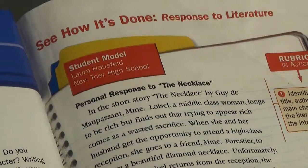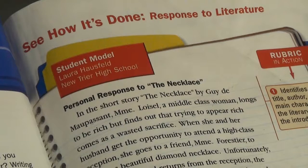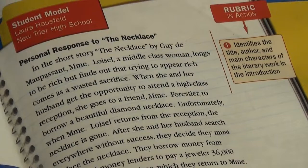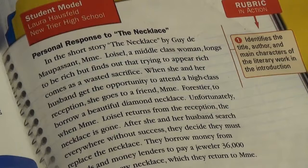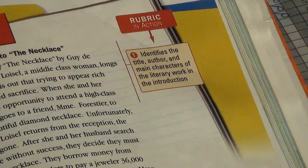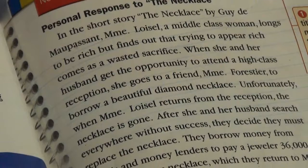This segment of the lesson is the class practice. We read through the student model together and discussed how it adhered to the rubric. We took notes on all five rubric components, and now we're going to see the rubric in action.